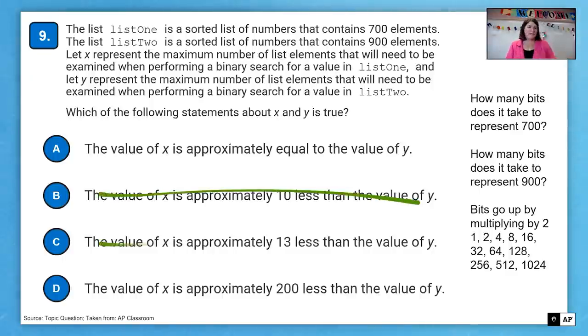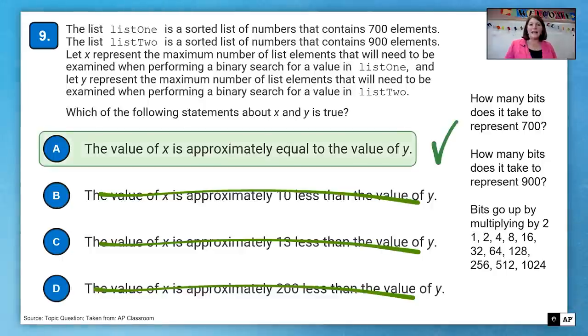So therefore, we can eliminate 10 less, 13 less, 200 less. That means they're going to be approximately equal. And so the answer is A.